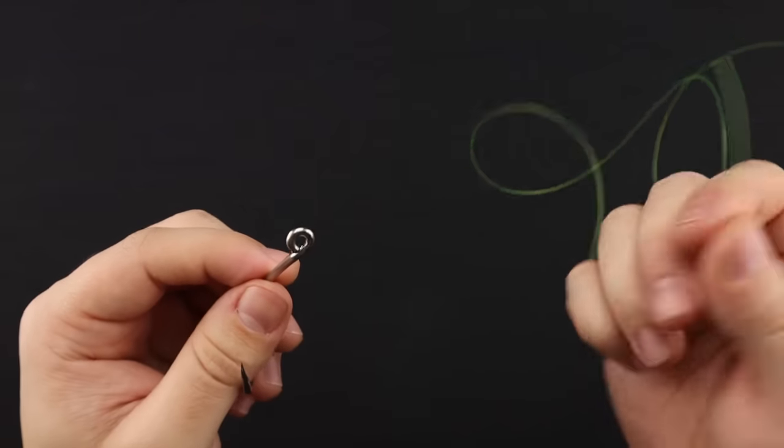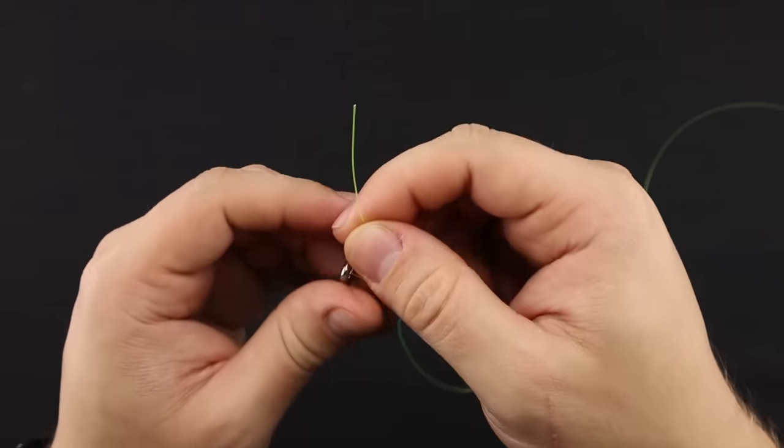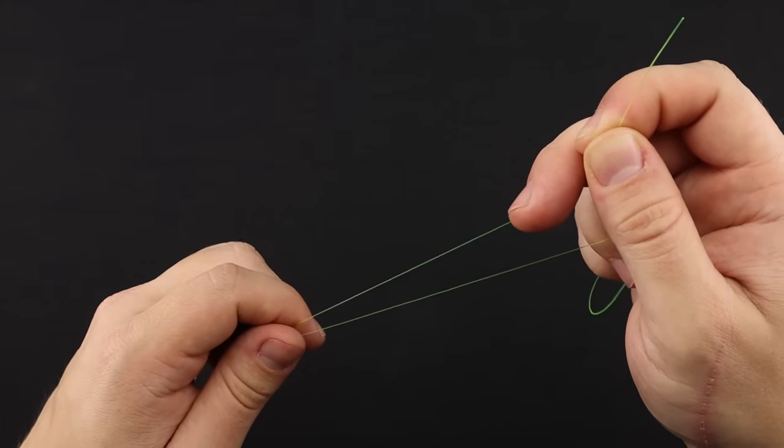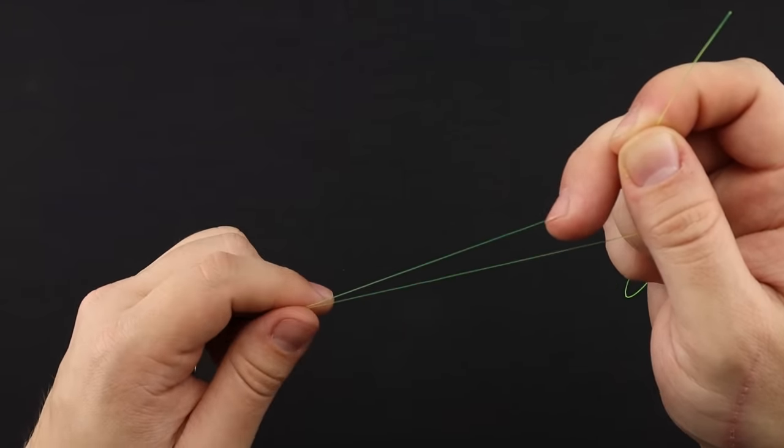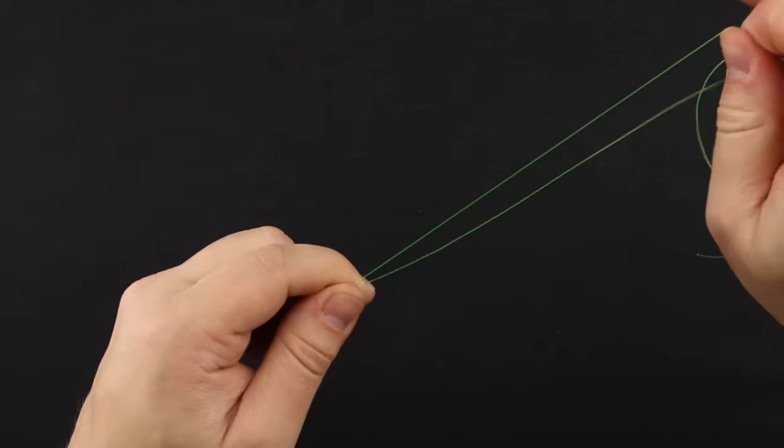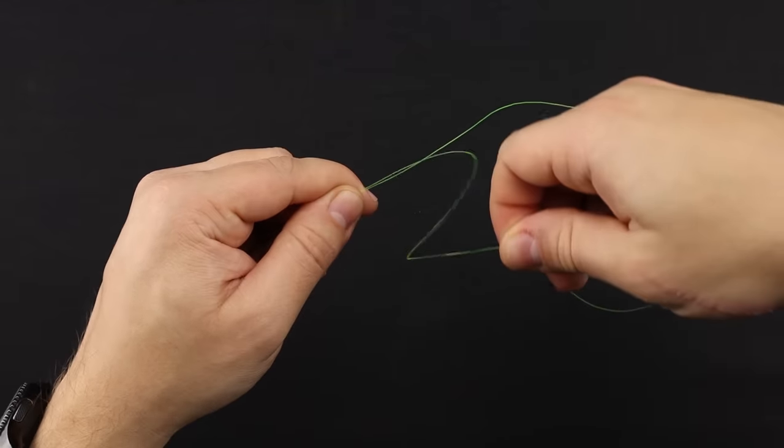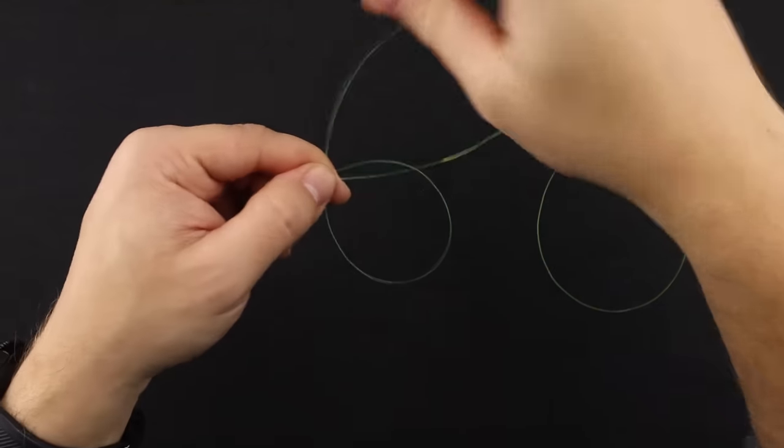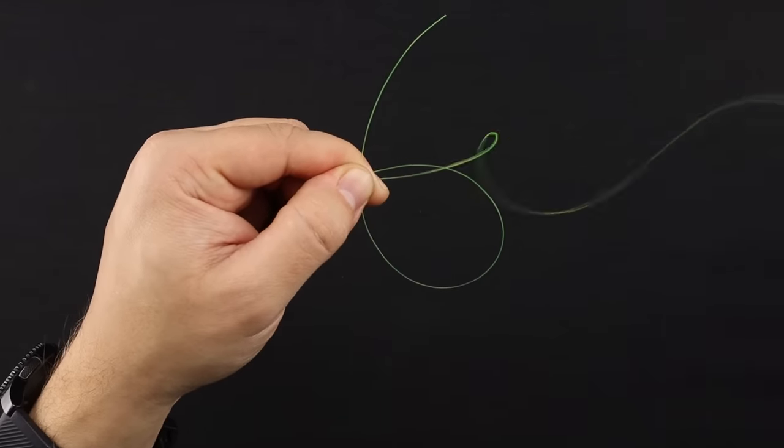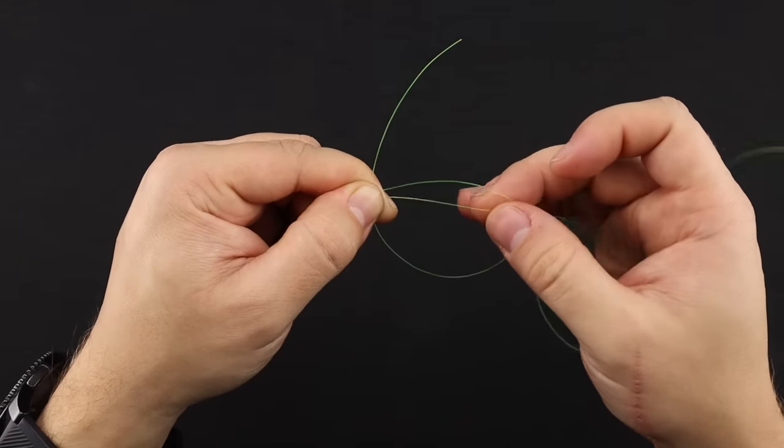All right, so for the monofilament we have a 12 pound test here. We're going to place that tag in through the eye of the hook. Give yourselves a good amount to work with about 8 to 10 inches or so. And I like to pinch the two lines over here to have these a little bit more parallel with each other. Now with your tag end, go ahead and create that loop like before and lay it right on top of the two lines. So you should have something that looks like this.